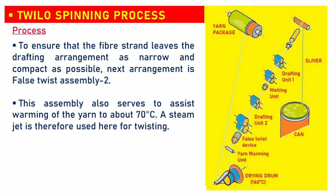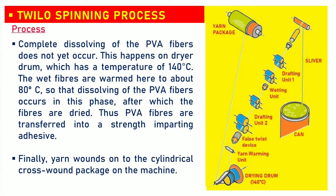The next arrangement is false twist assembly 2. This assembly also serves to assist warming of the yarn to about 70 degrees centigrade. A steam jet is therefore used here for twisting. Complete dissolving of the PVA fibers does not yet occur here. This happens on the dry drum, which has a temperature of 140 degrees centigrade. The wet fibers are warmed to about 80 degrees centigrade, so that dissolving of the PVA fibers occurs in this phase, after which the fibers are dried. Thus, PVA fibers are transferred into a strength-imparting adhesive. Finally, the yarn winds onto a cylindrical cross-wound package on the machine.